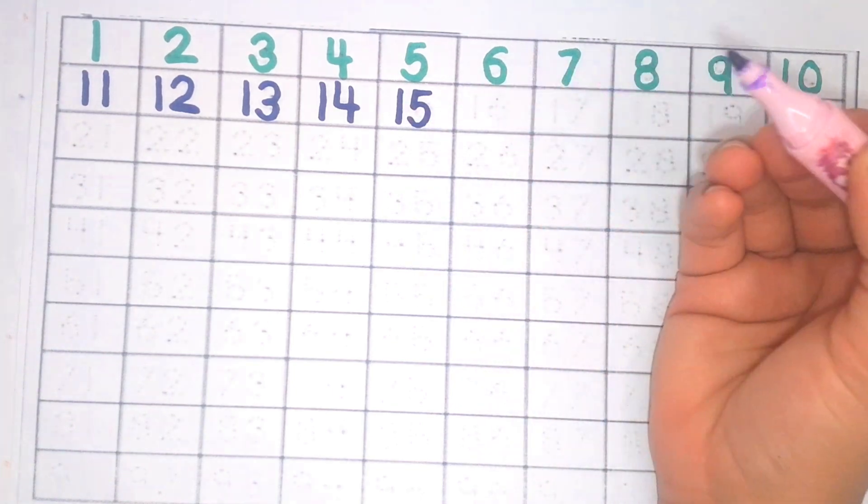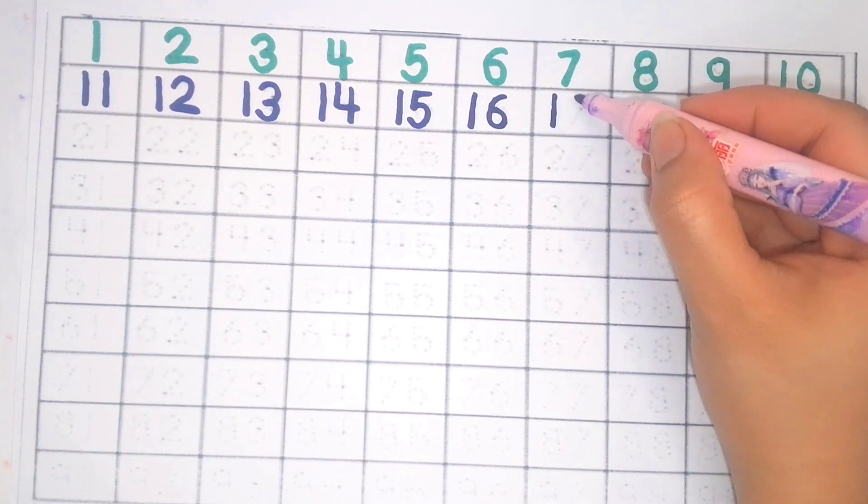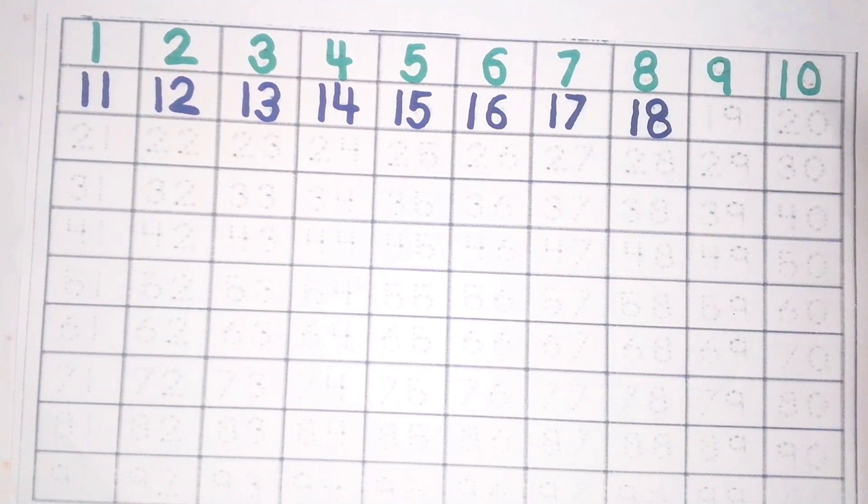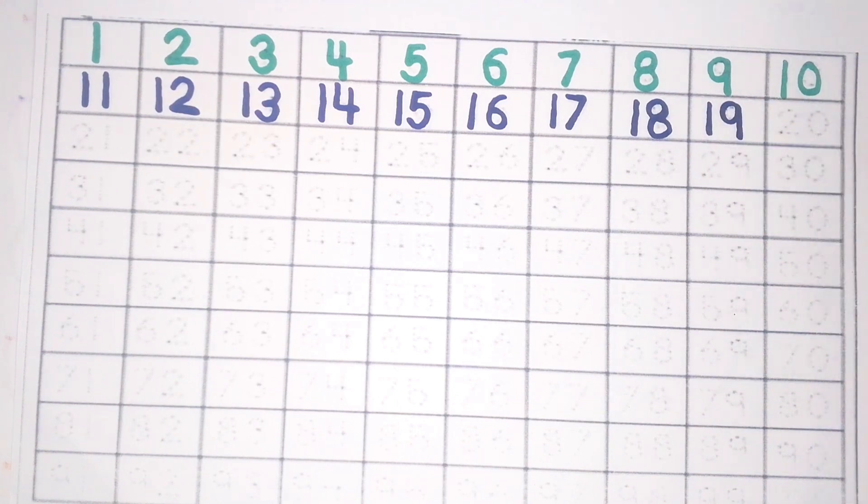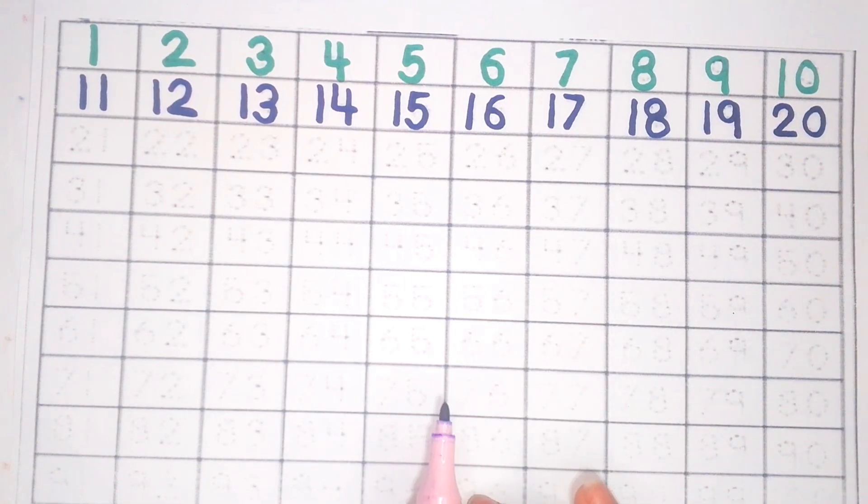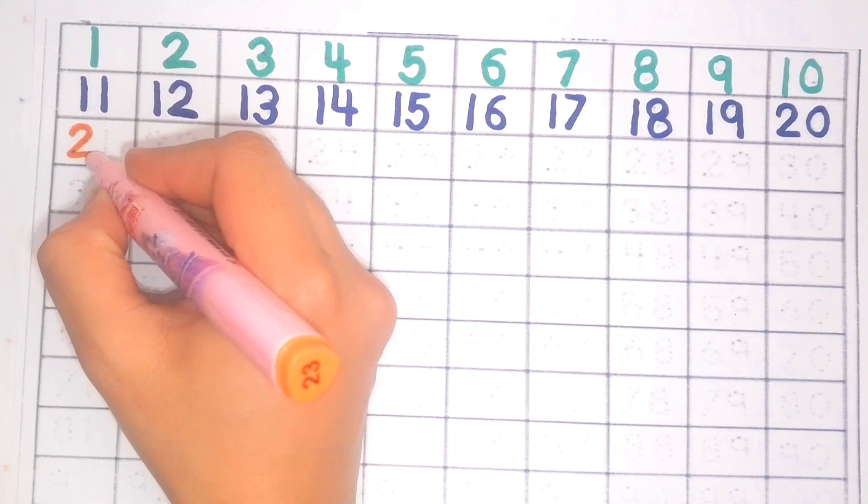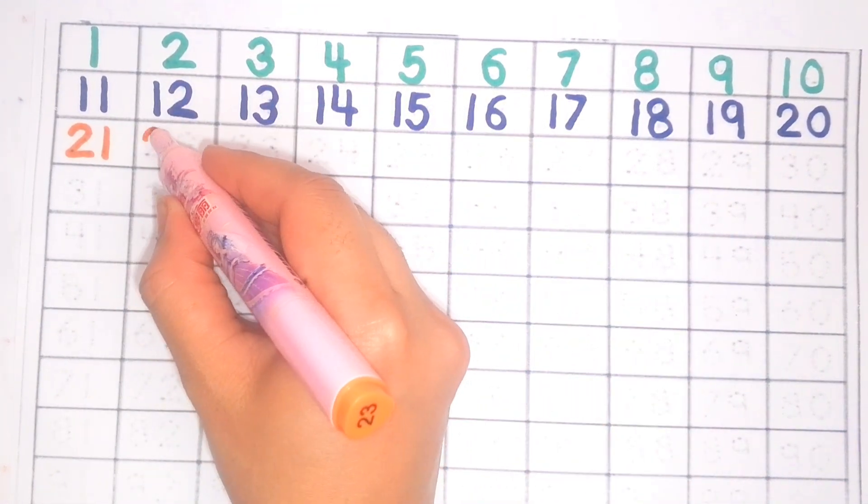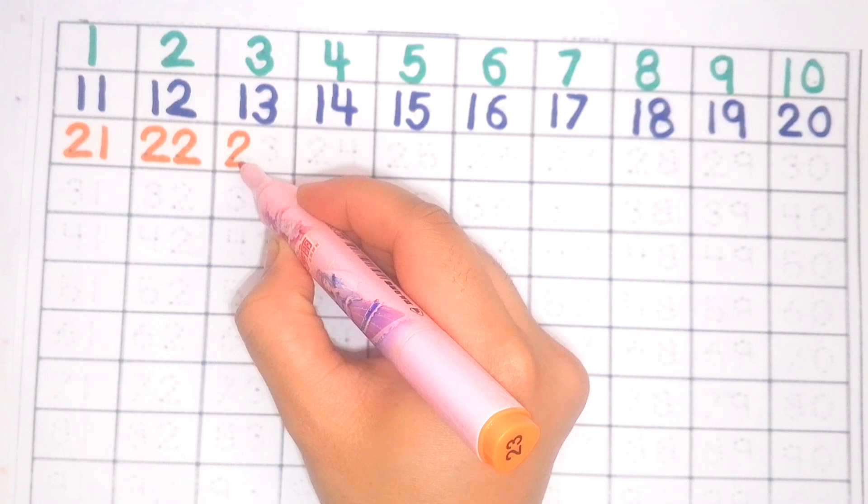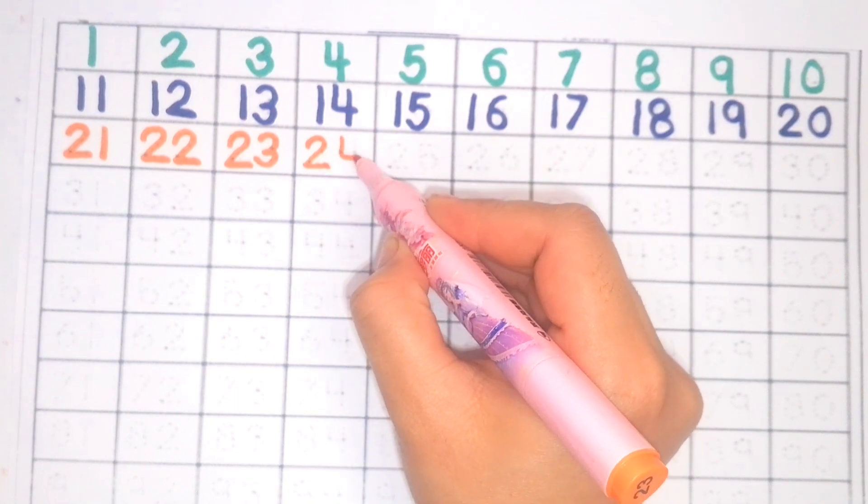One five fifteen, one six sixteen, one seven seventeen, one eight eighteen, one nine nineteen, two zero twenty, two one twenty-one, two two twenty-two, two three twenty-three, two four twenty-four.